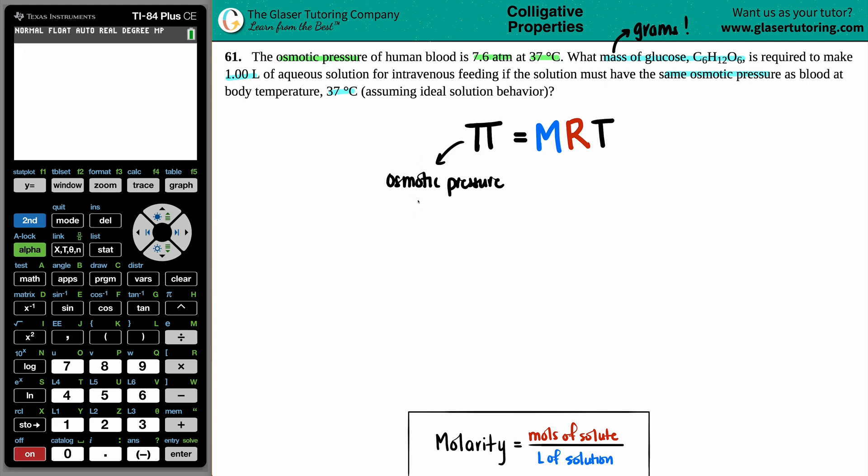They did tell us we have 7.6 atms. Now, the osmotic pressure is always going to equal MRT. Molarity, capital M - capital M is always molarity - times the standard R value. This is a constant number. There's two R values in chemistry. We are using the one that deals with pressure values. So that is the 0.0821, or if you want more decimals, 0.08206.